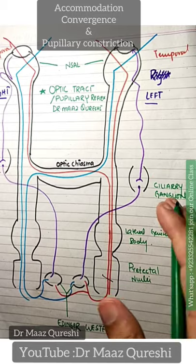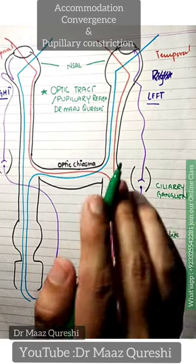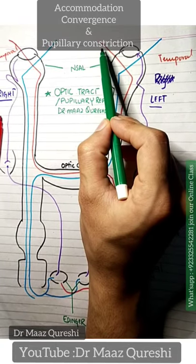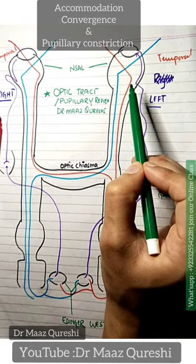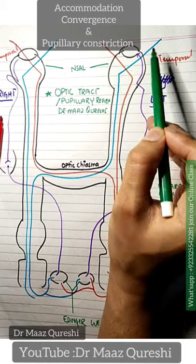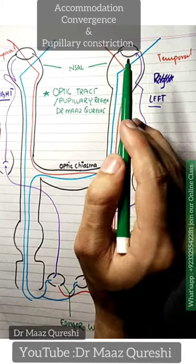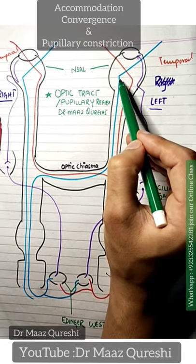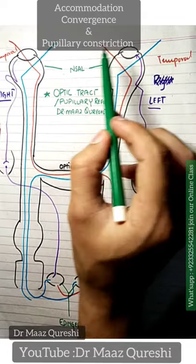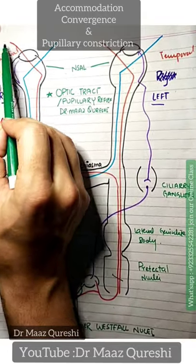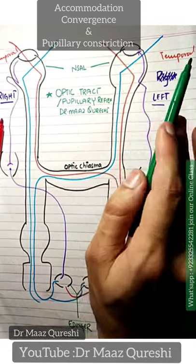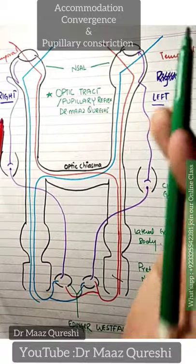Remember, you have the nasal side and you have the temporal retina on the temporal side, and you have the nasal retina. The blue represents nasal retina and the red color represents the temporal image — nasal. So don't confuse yourself from the start.